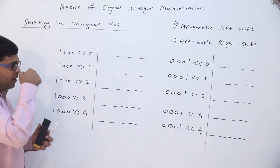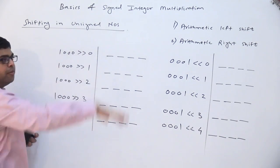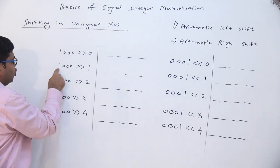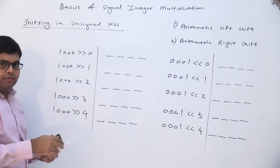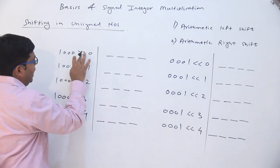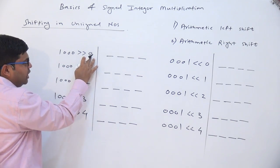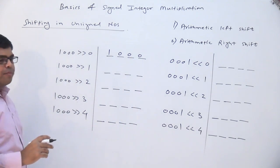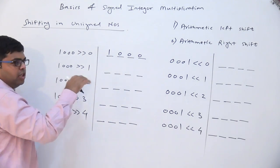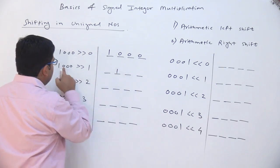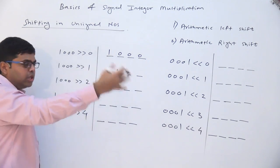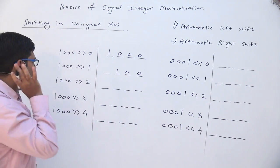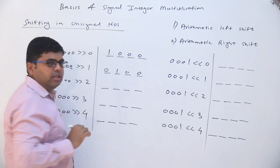Let us take the shift operations in case of unsigned numbers. When I say unsigned numbers, we are going to interpret this 1 as a value place, not as a sign bit. So 1 0 0 0 when I shift by 0 places it will remain as it is. When I shift it by 1 place to the right, this 1 will get copied here, this 0 will get copied 1 place to the right, and similarly the second 0 will get copied here.